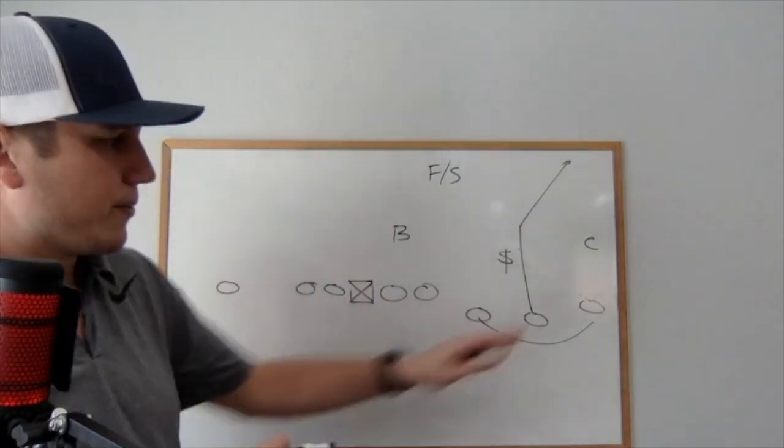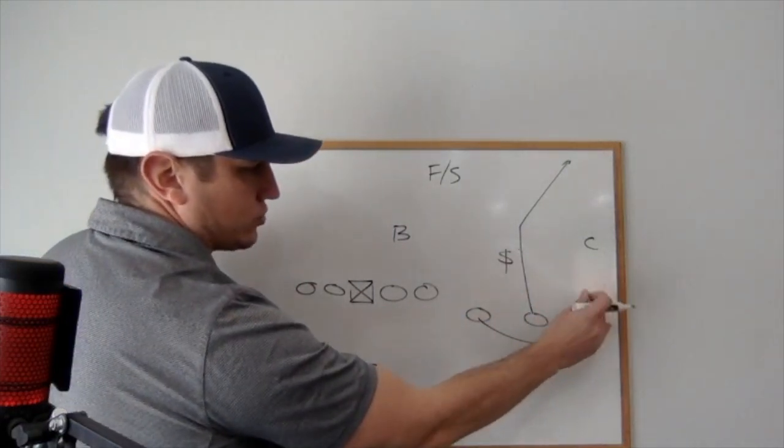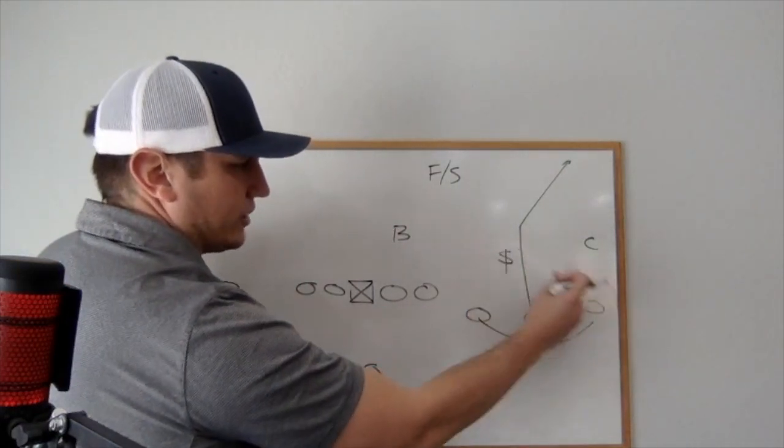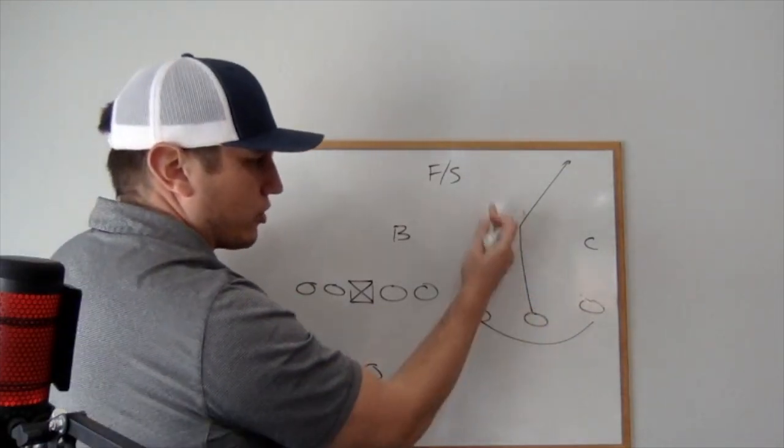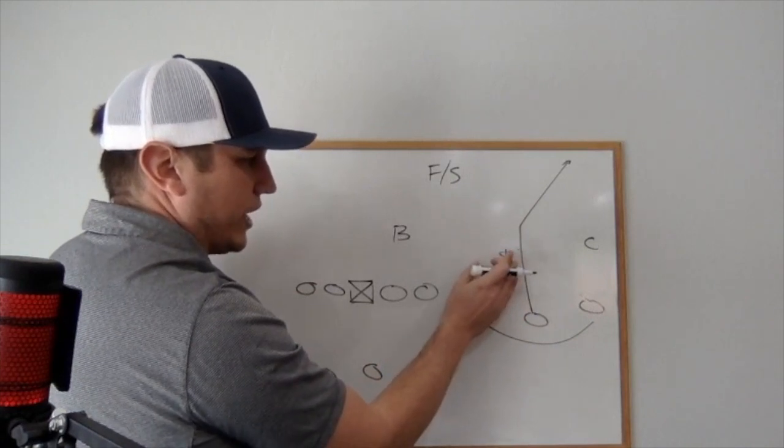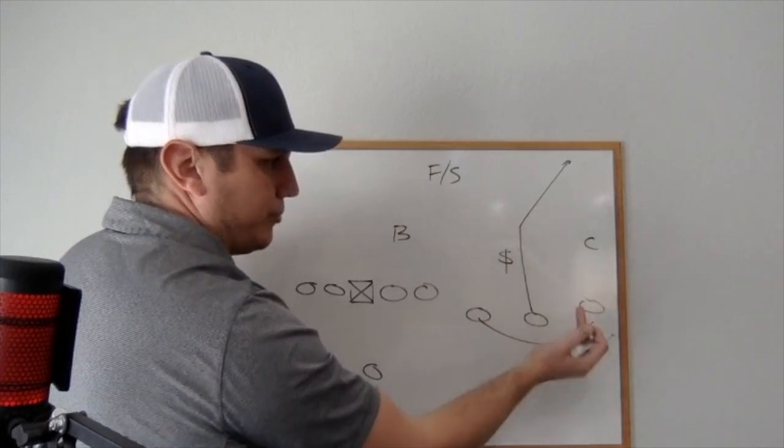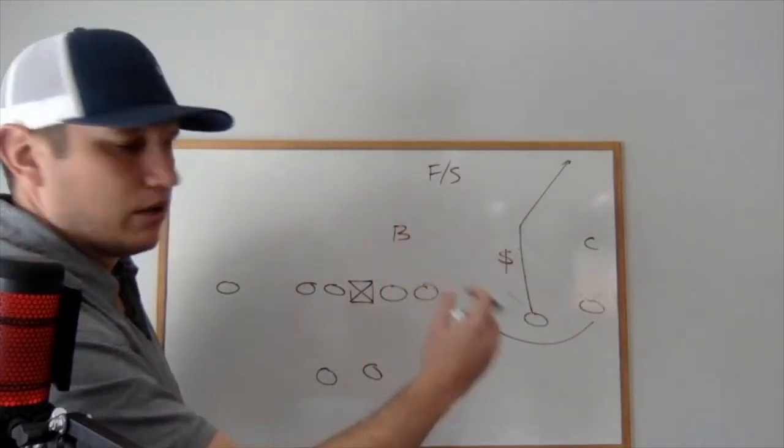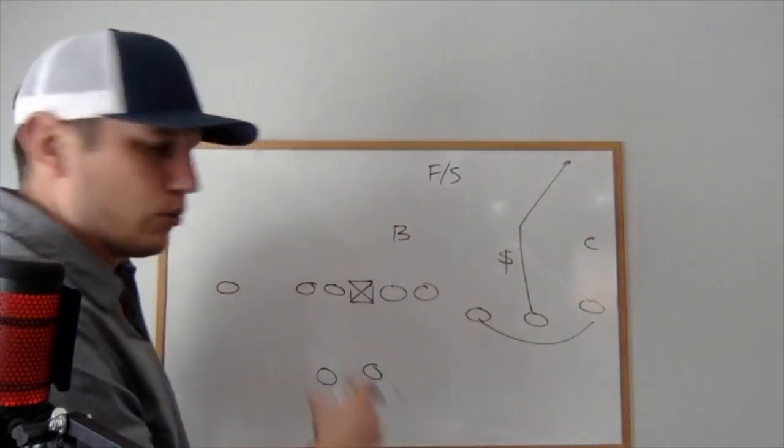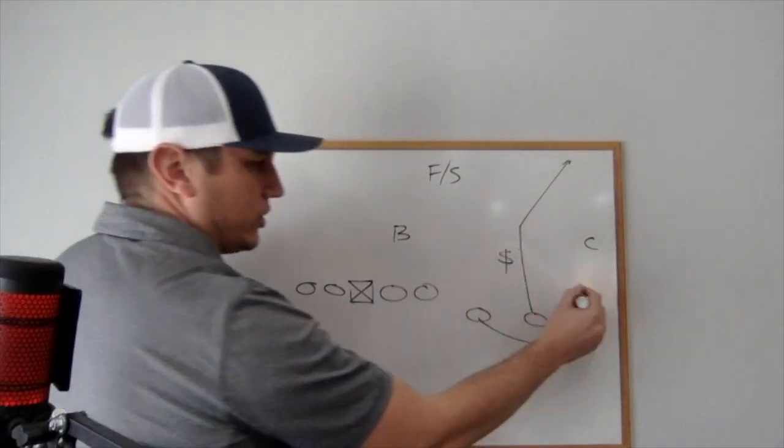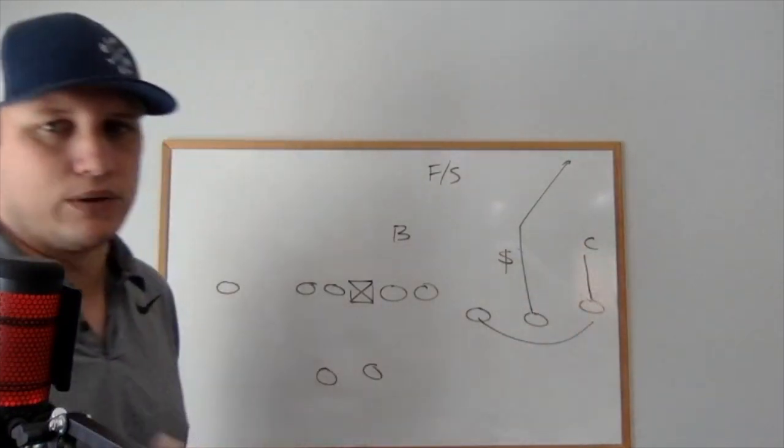Now with number one receiver here, the reason why we don't have him just run 45 in and straight to a spot is because we want our number two receiver to get vertical and really push this overhang defender. We really want him to clear out so we can kind of get a little bit of a rub action from our number one receiver when he spots up and sits in the grass. So with our number one, what we do is we actually get him and we take him vertical for about six yards.